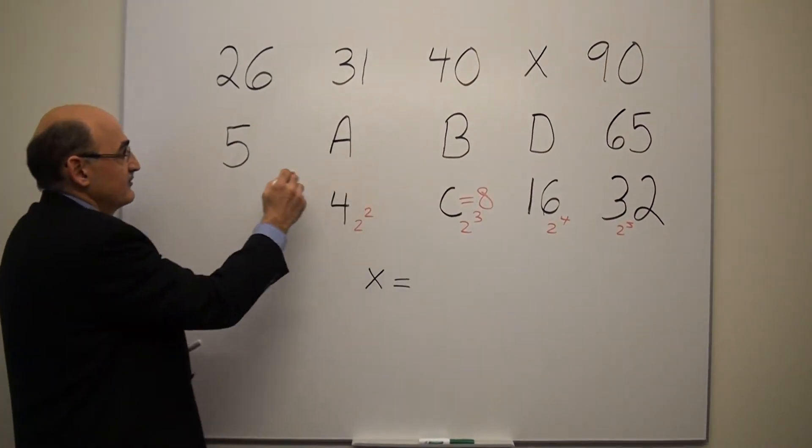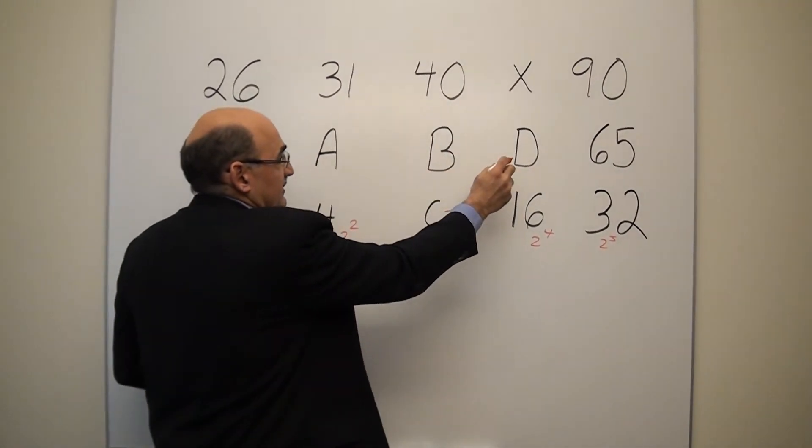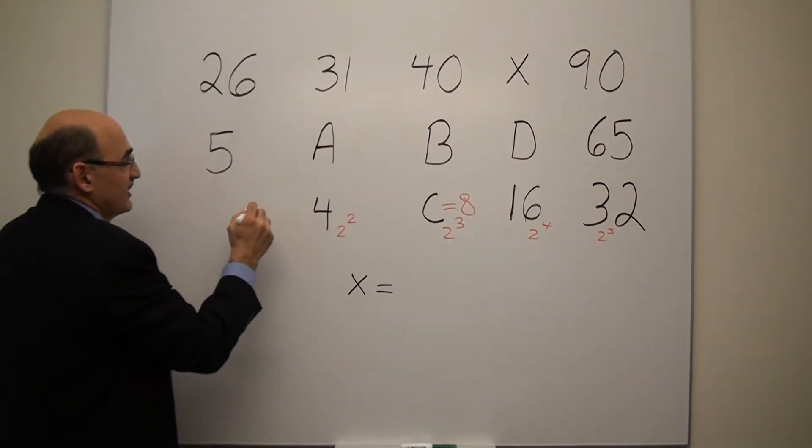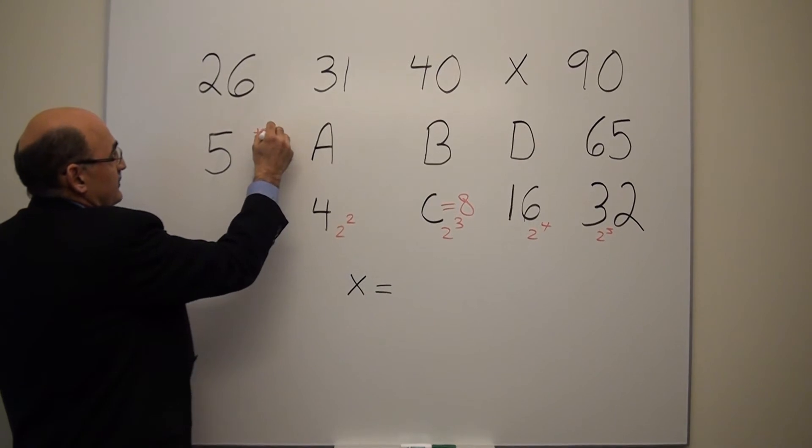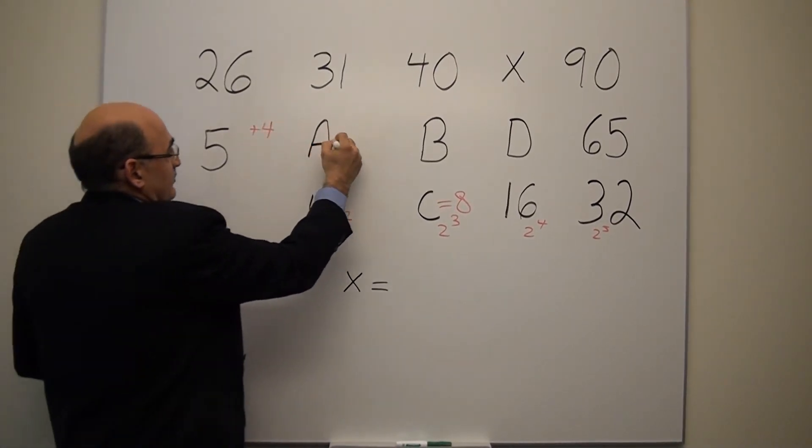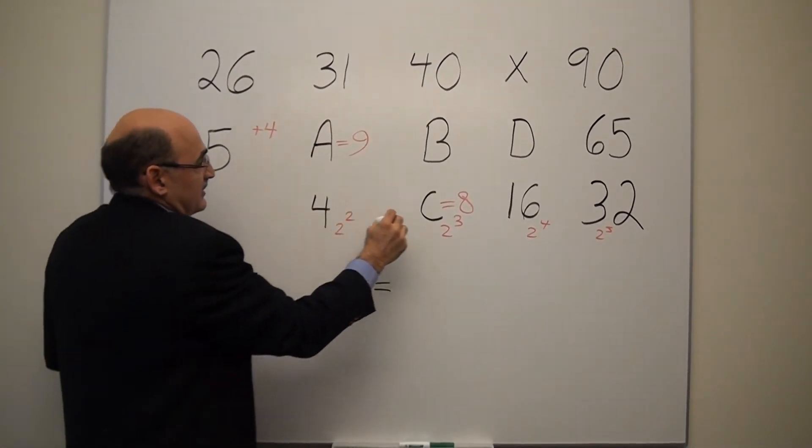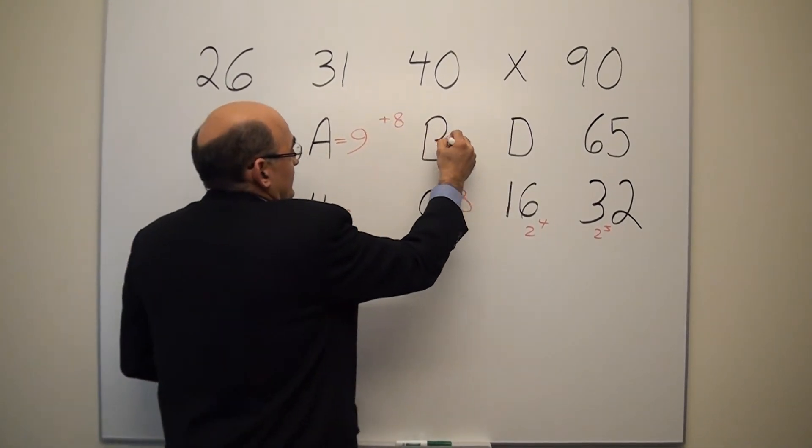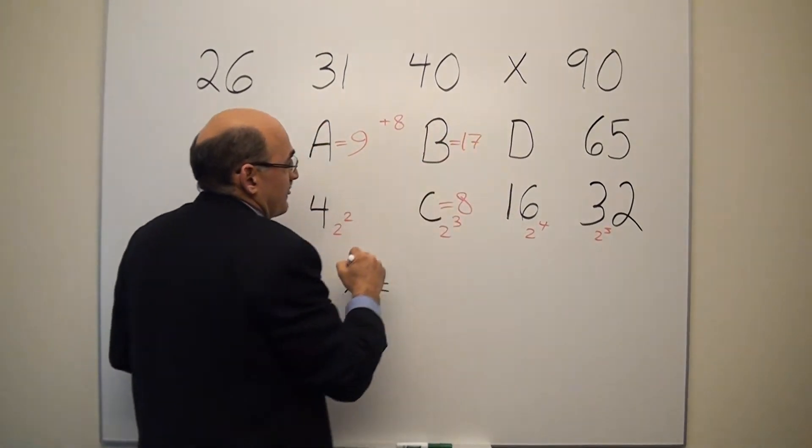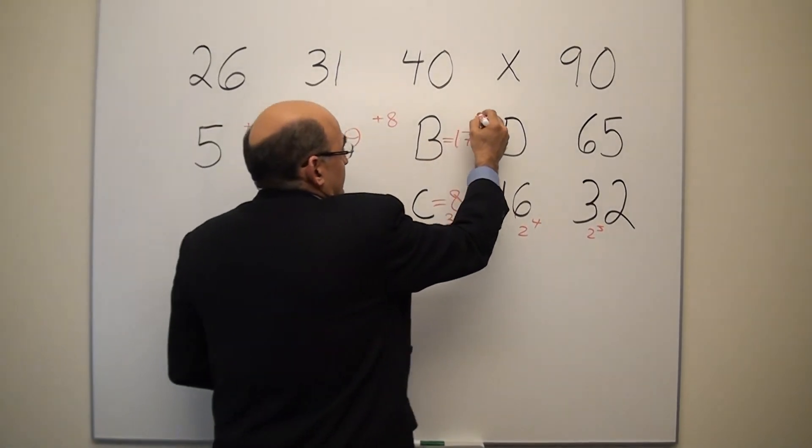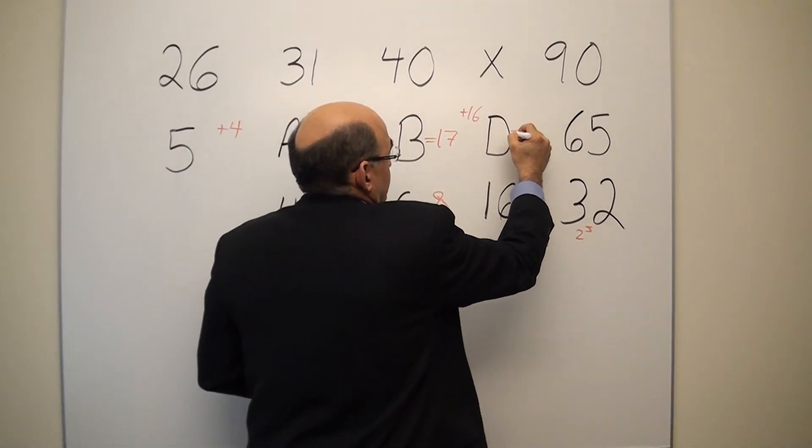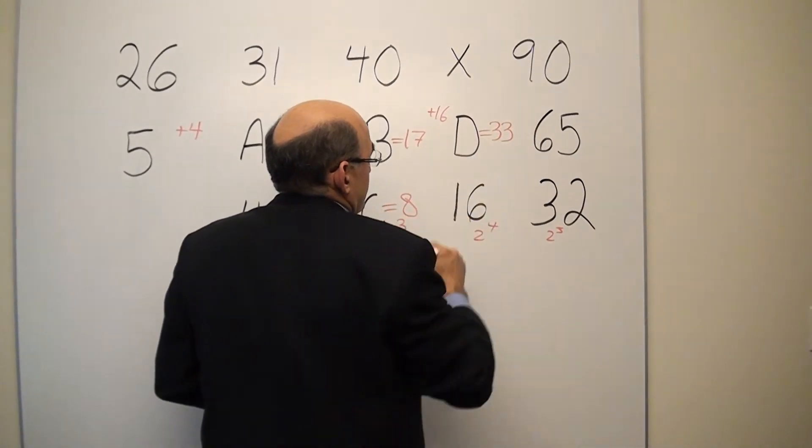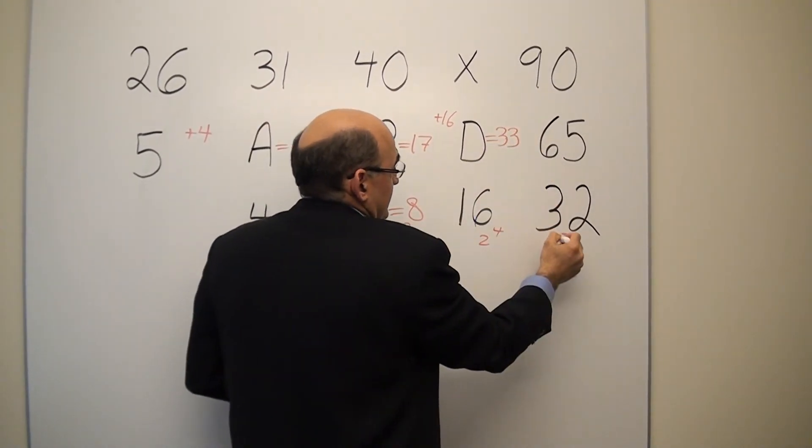Now you use this sequence to get answers for a, b, and d in order to go and solve for x. So 5 in this case, 5 plus 4, you get a equals 9. 9 plus 8, you get b equals 17. And 16 plus 17, you get 33. And to check that, 33 plus 32, you get 65.